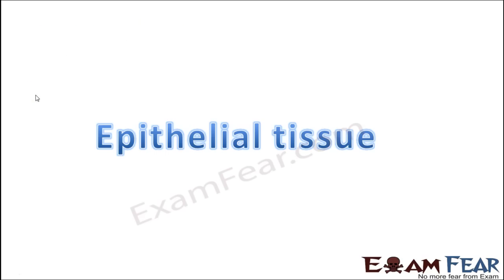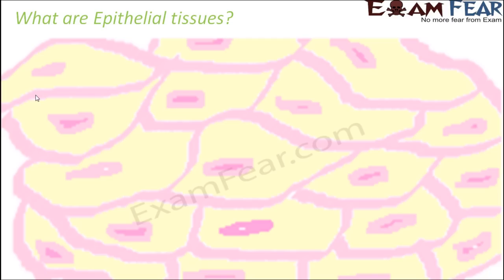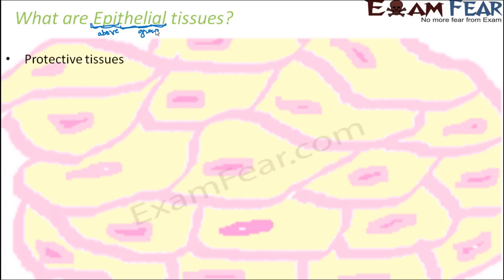We will start our discussion with epithelial tissue. So what are epithelial tissues? The name must be telling something. What is the meaning of epithelial? 'Epi' means above and 'thelial' means grow — so something which grows above is known as epithelial. A rough idea is that it has to be something which is on the outer side or above something. Epithelial tissues are the protective tissues and they are generally above all other tissues.